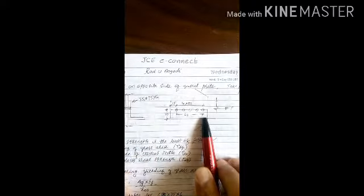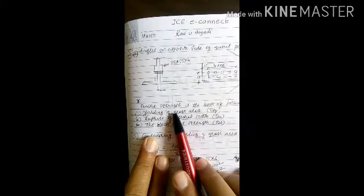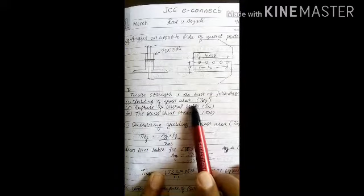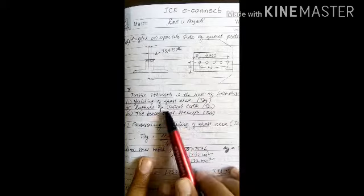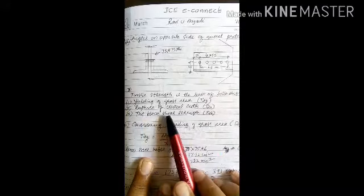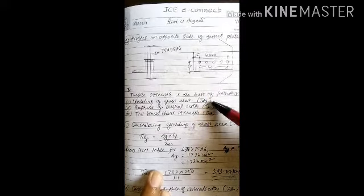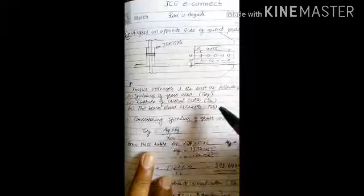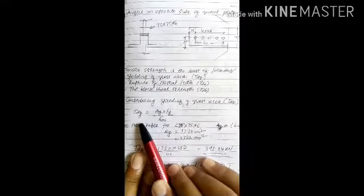We need to calculate the tensile strength of the angles. The tensile strength is the least of the following three: strength due to yielding of gross area (TDG), strength due to rupture of the critical section (TDN), and strength due to block shear (TDB). We follow the same procedure as the single angle problem.